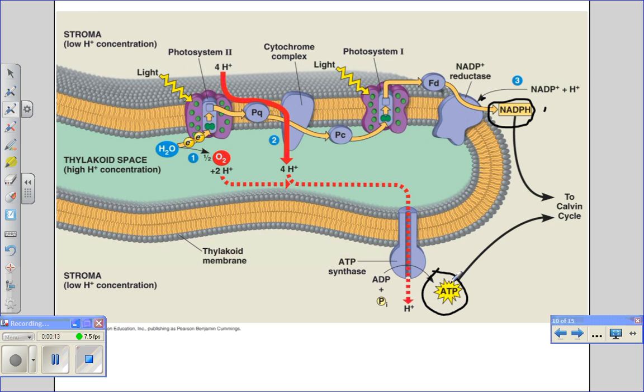The Calvin cycle uses more ATP than it does NADPH, so there's a special type of electron flow that's used to create the additional ATP that's needed. This is called cyclic electron flow.